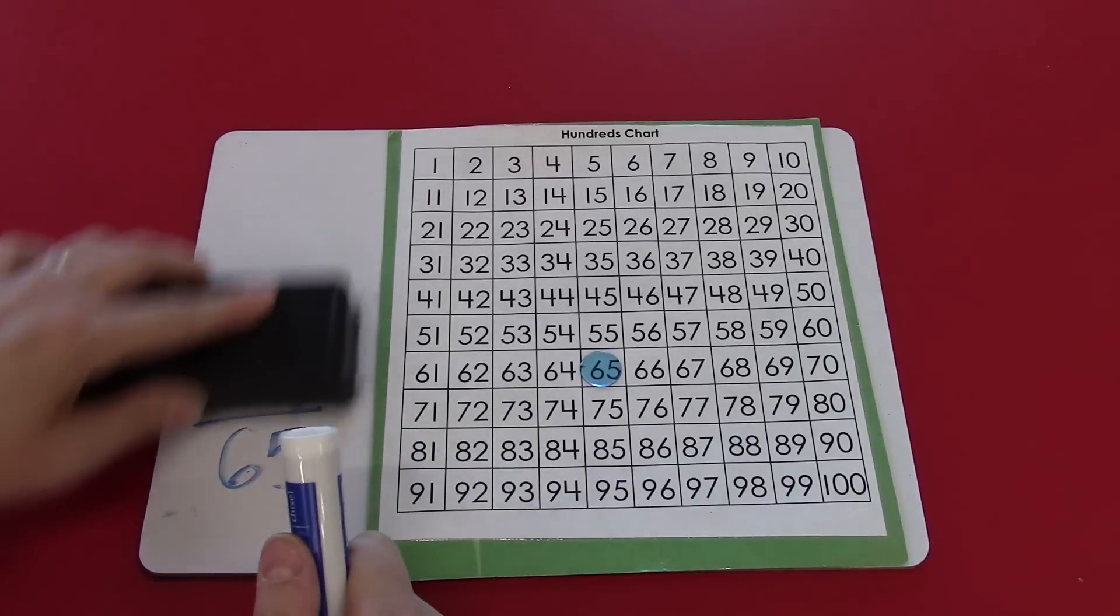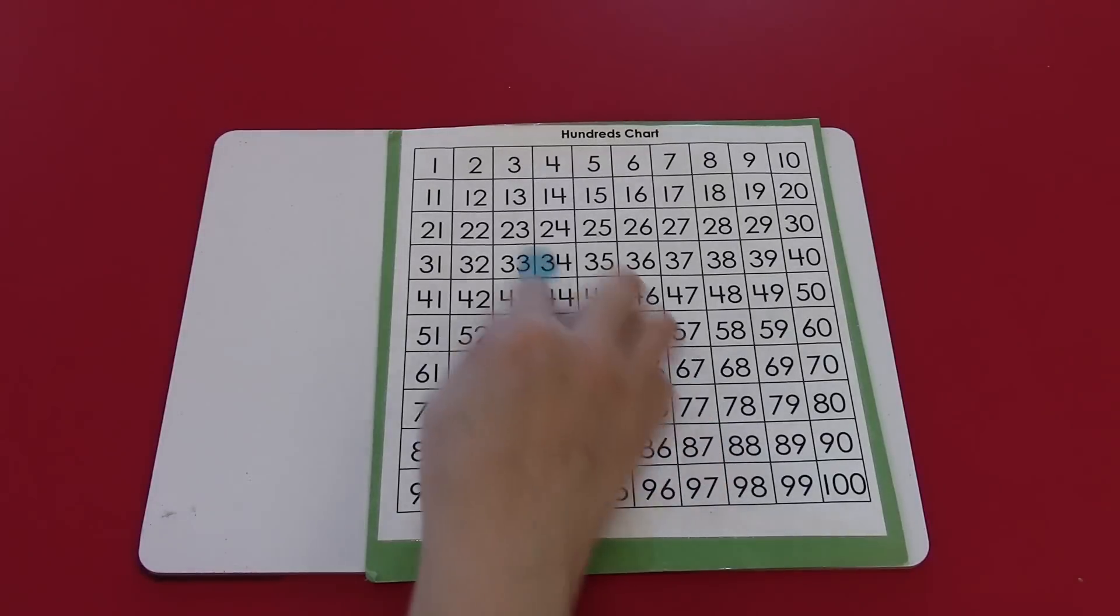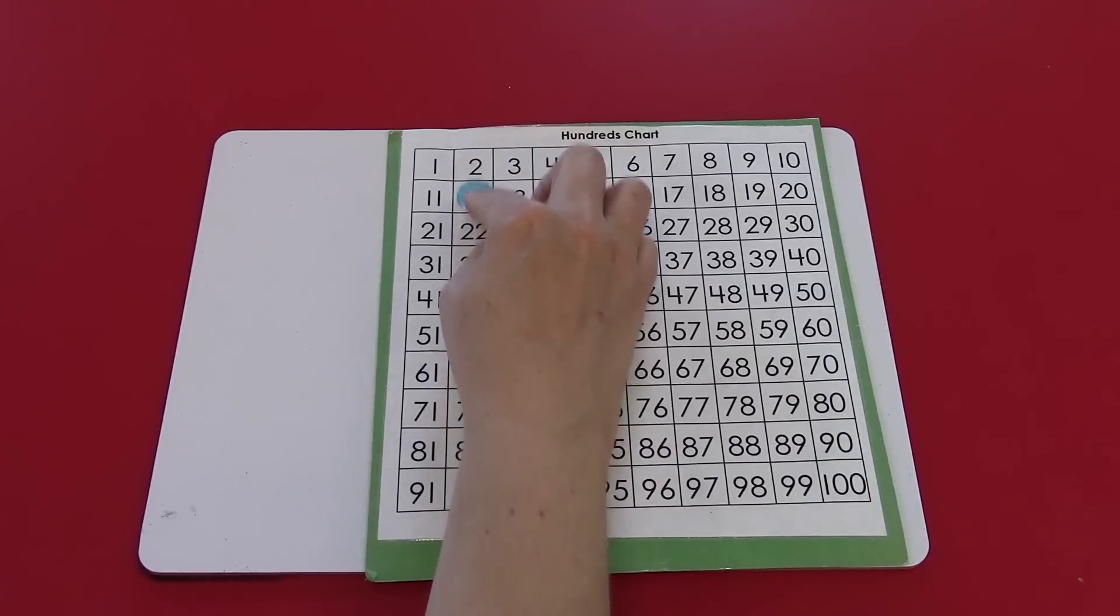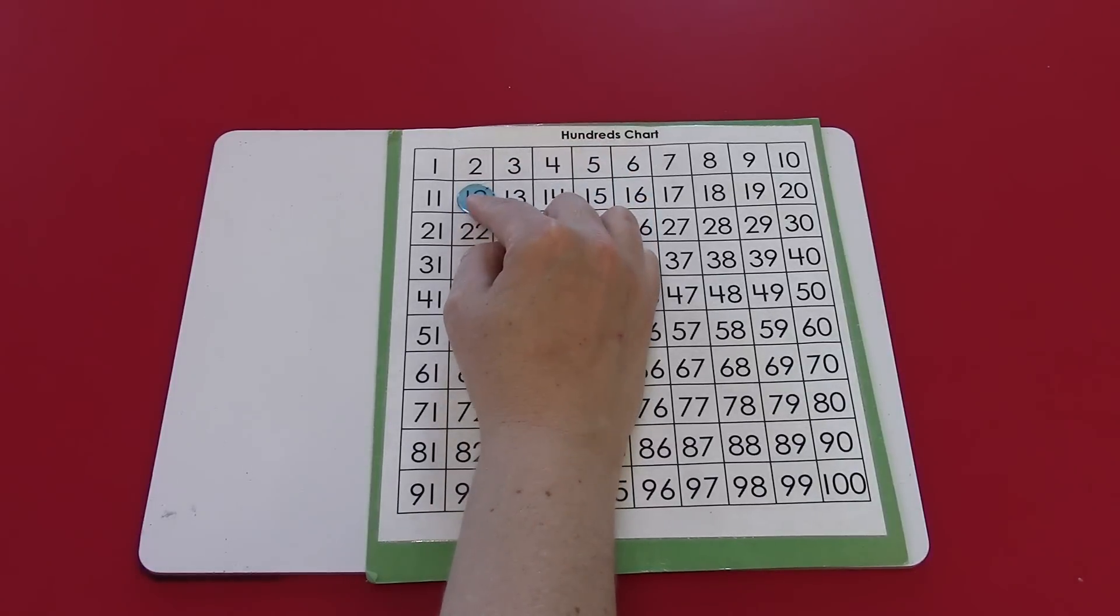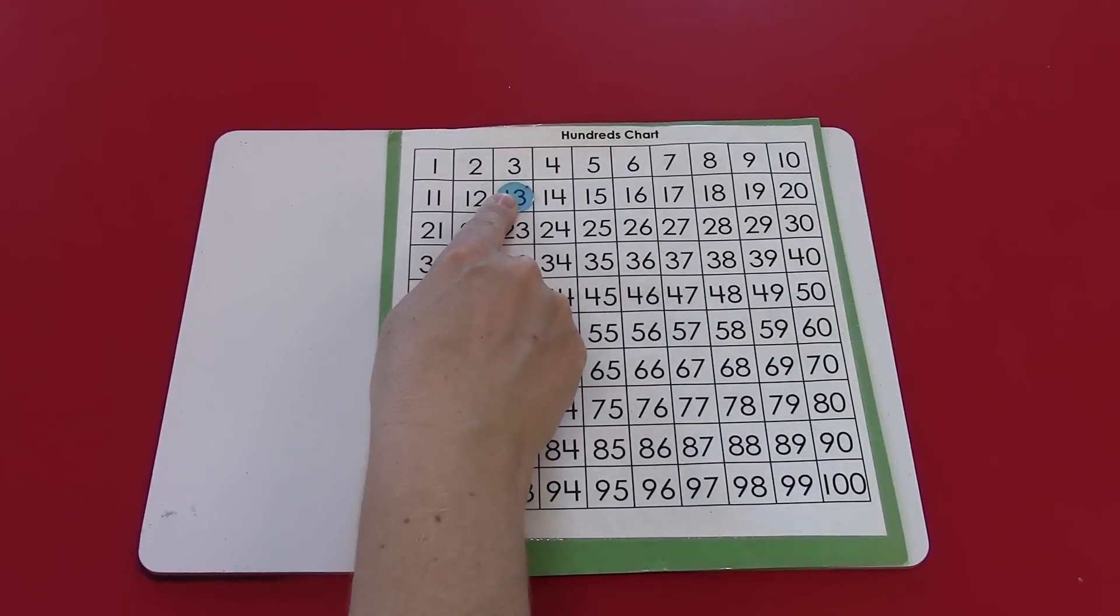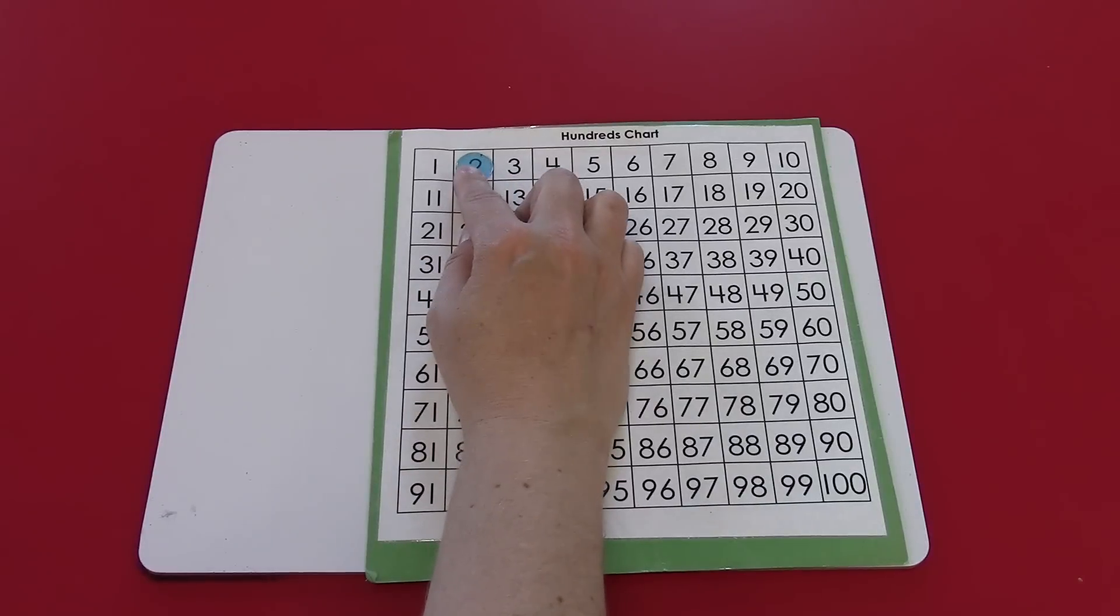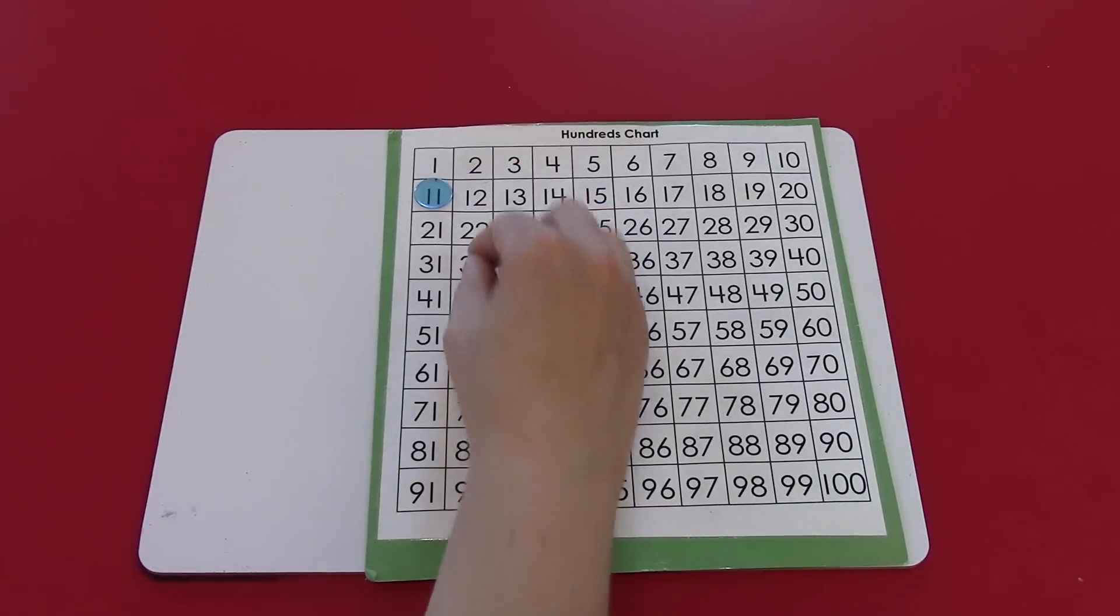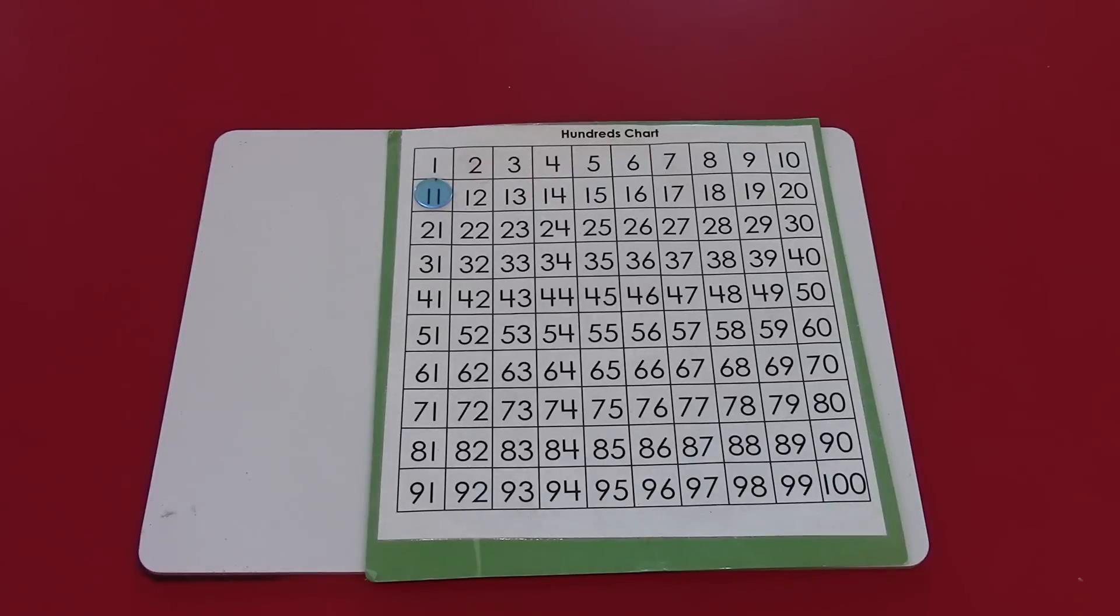So let's review some of the things that you learned in this video. On a hundreds chart, when you go to the right, it gets bigger by 1. On the hundreds chart, when you go down, it gets bigger by 10. When you go diagonally to the right, it gets bigger by 11. And when you go diagonally to the left, it gets bigger by 9. I hope these strategies help you when you're adding bigger numbers.